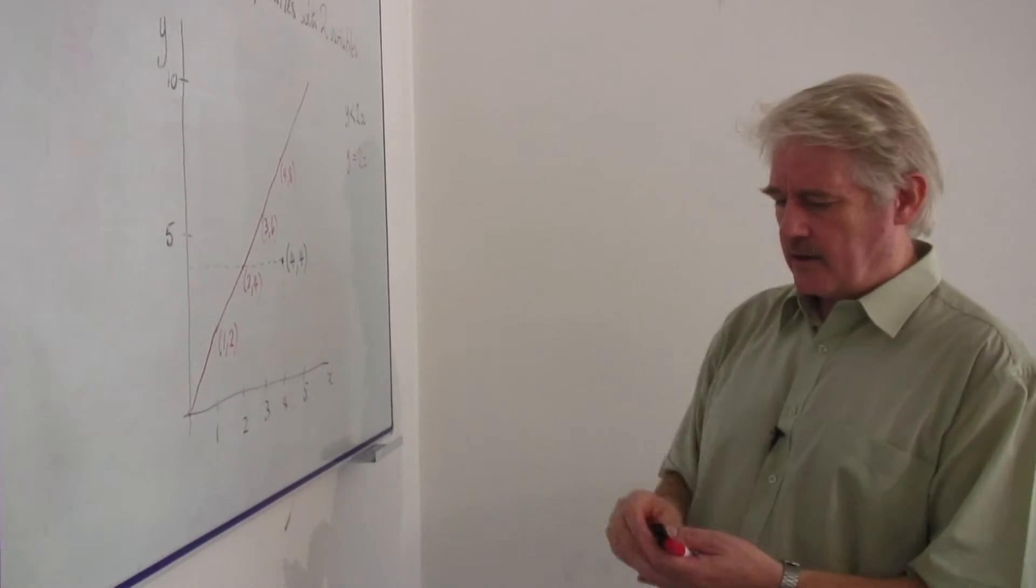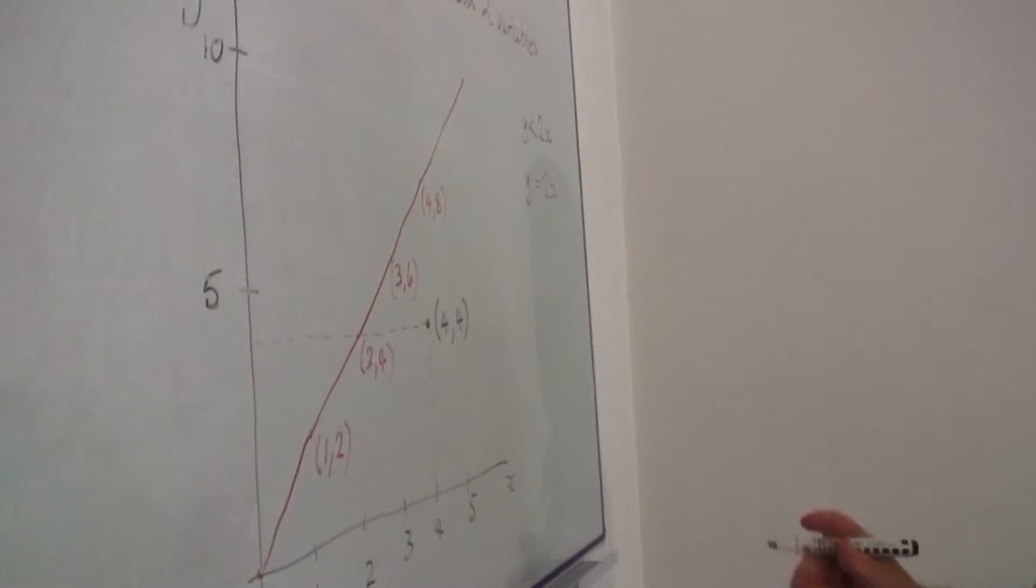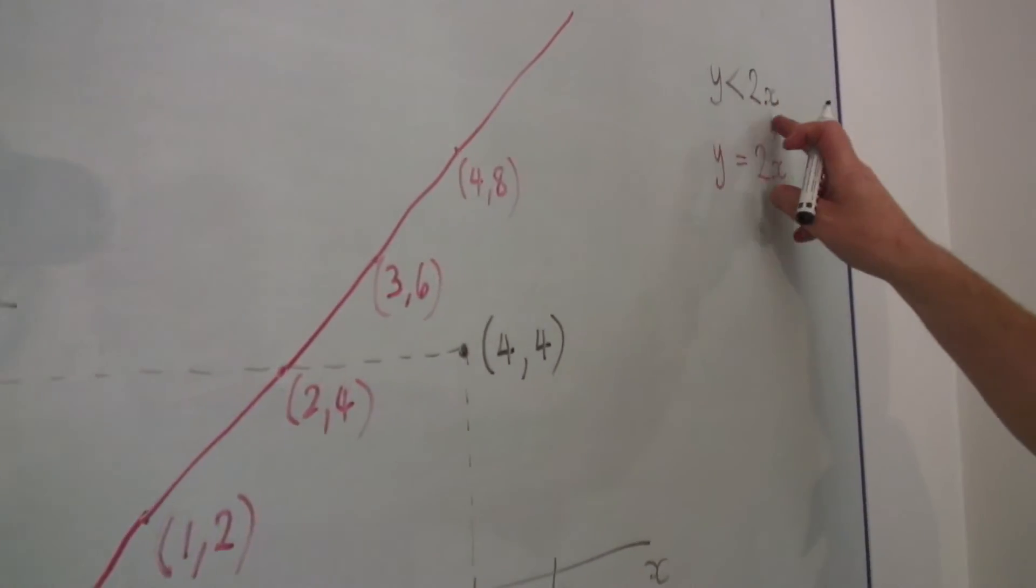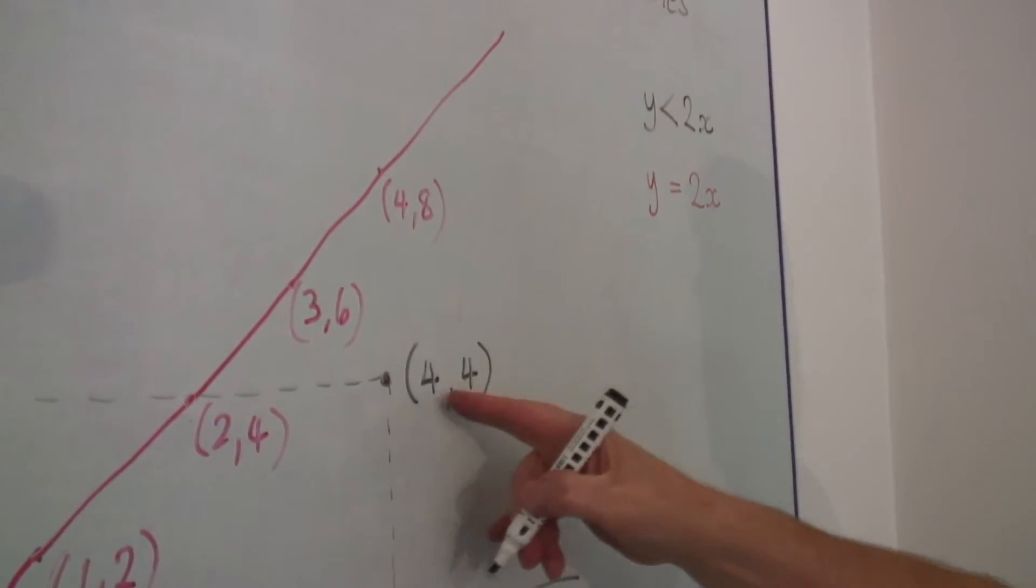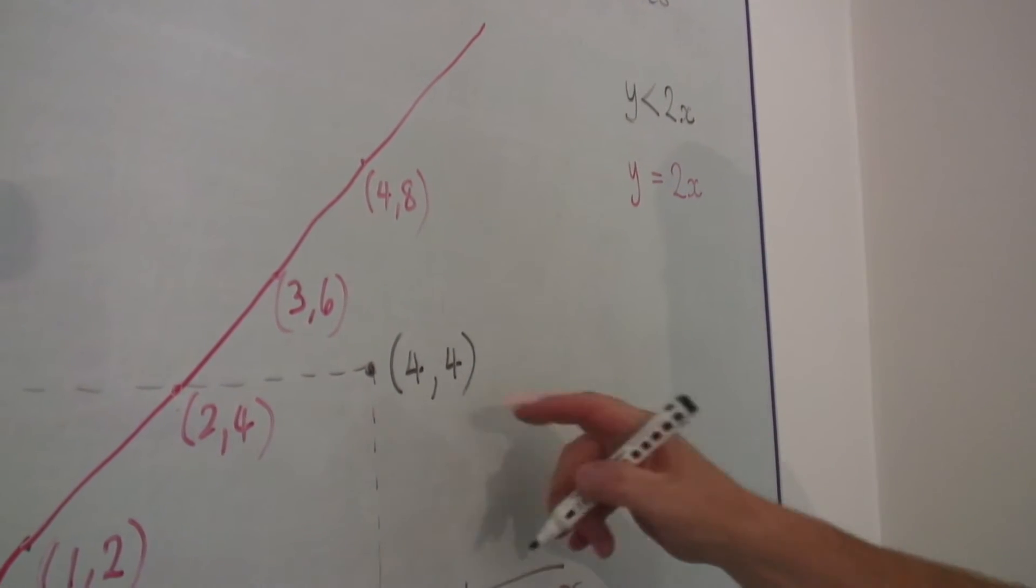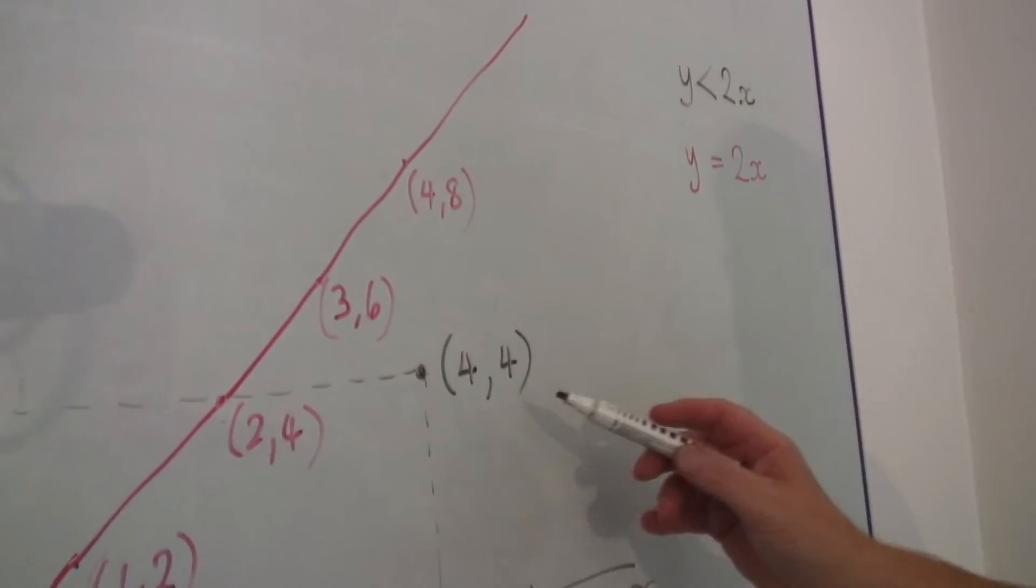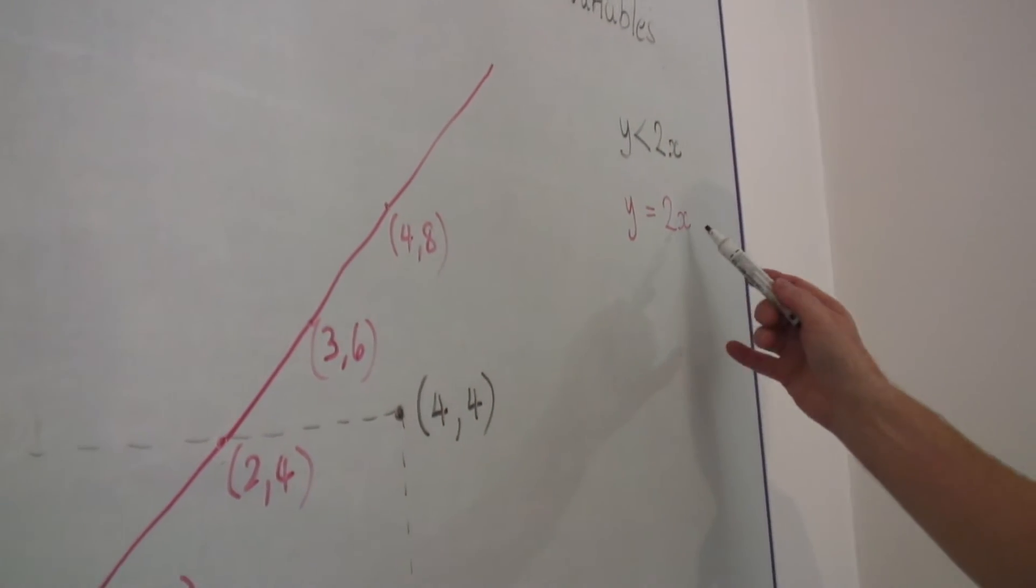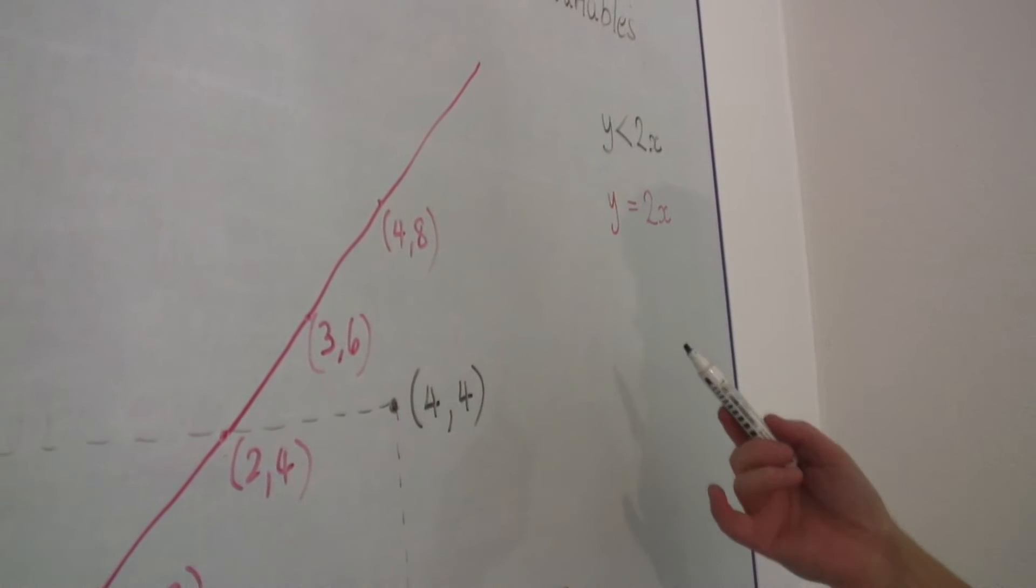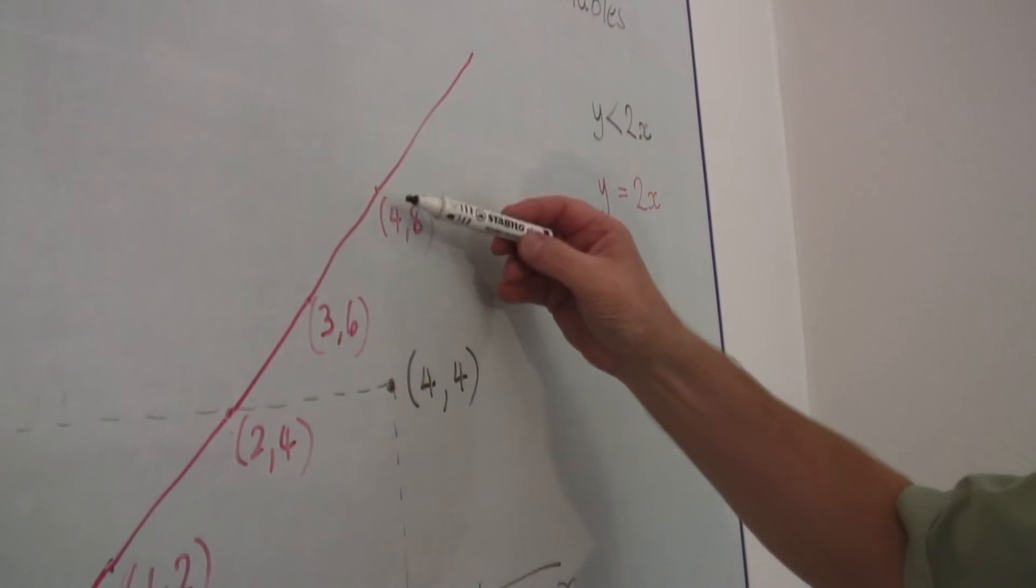Well, let's have a look at this point four, four and let's see where it comes. So four, four. Is y equal to two x? No. If I put it into y is equal to two x, four is not equal to eight. So in fact,